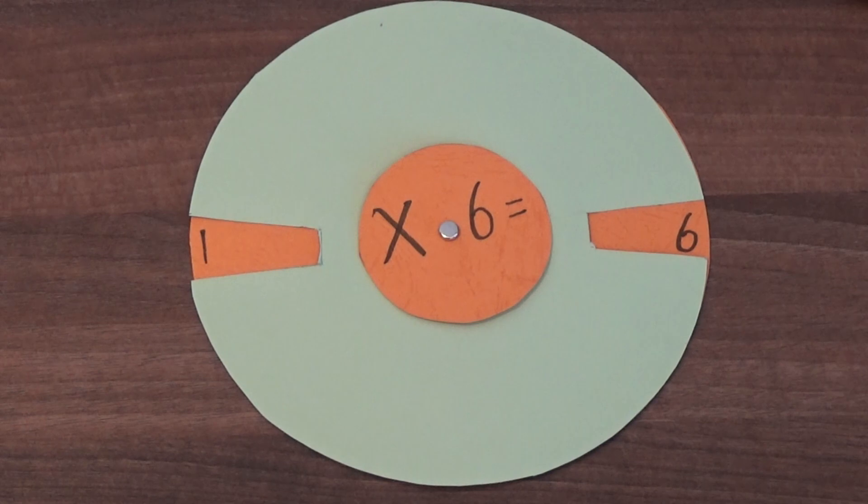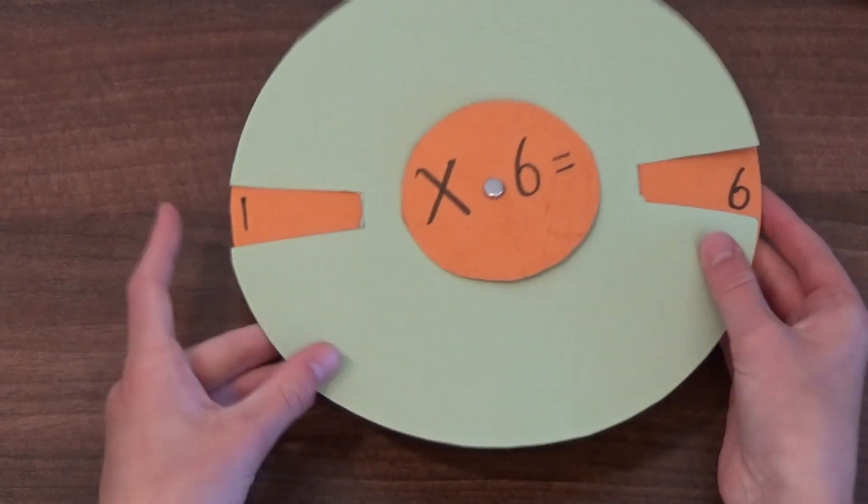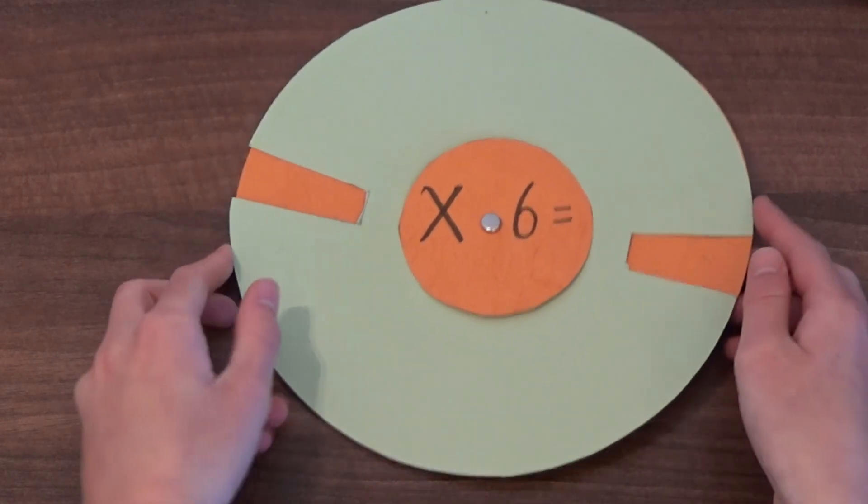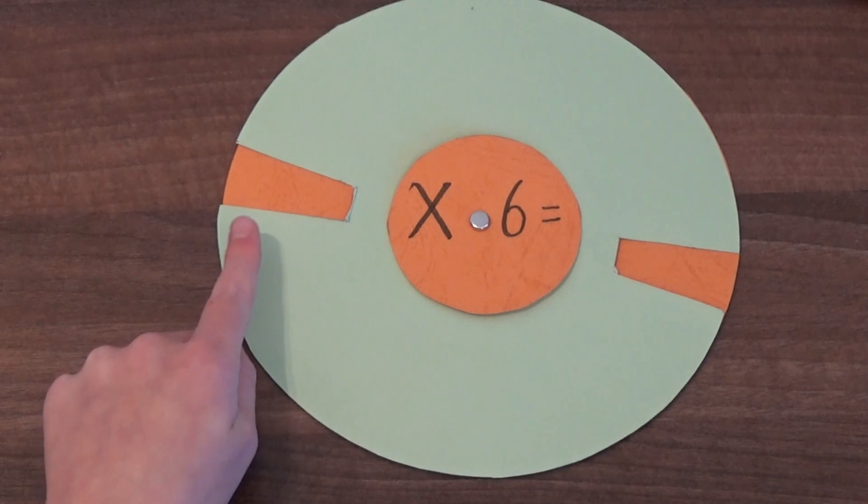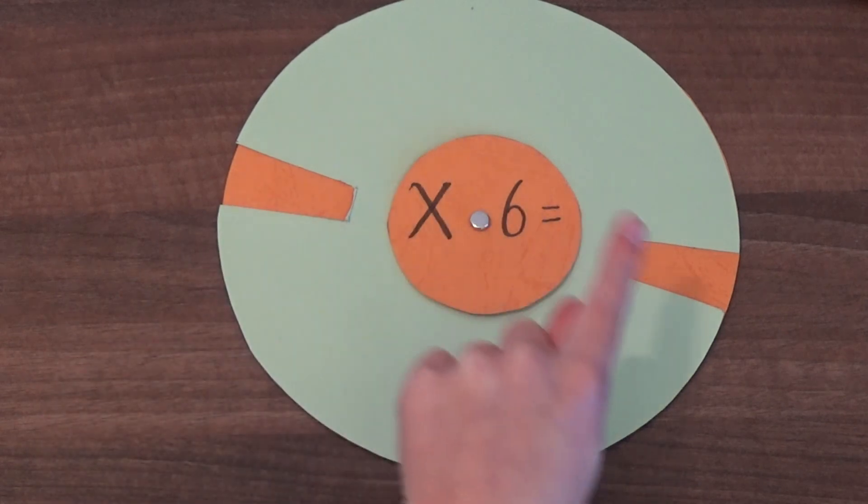I'm now going to spin my wheel so I have a new section. I'm now going to write 2 times 6 equals 12.